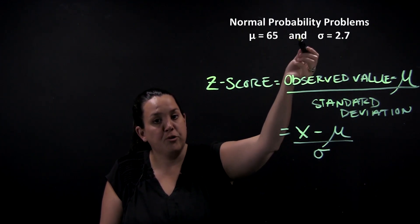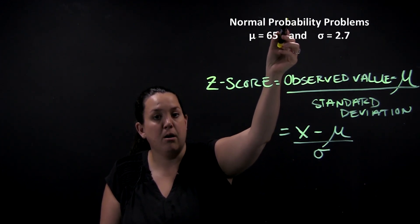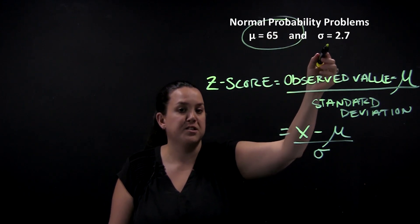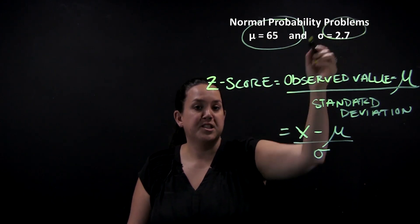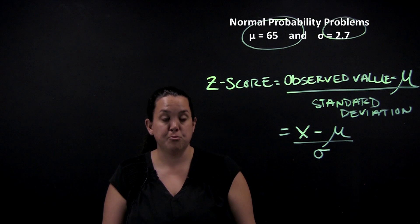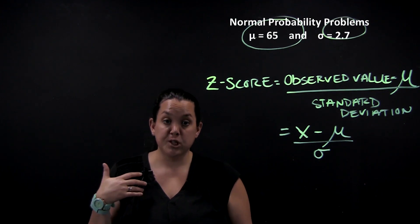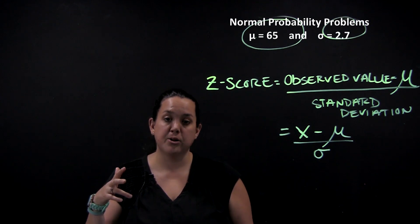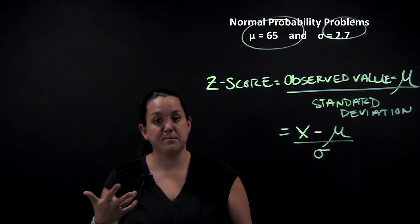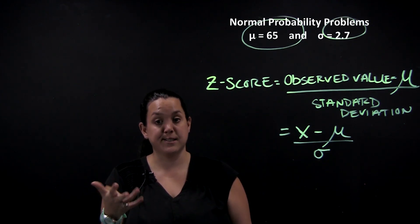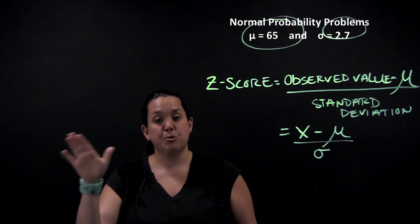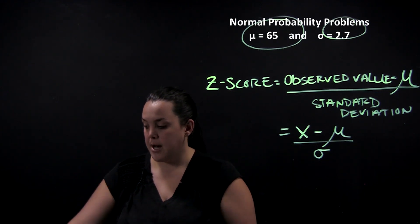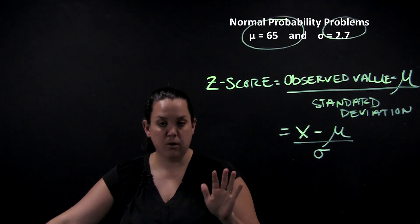Today I'm looking at the population of college females and their height. We have a mean of 65 and a standard deviation for the population of 2.7. I want to measure a z-score for my height because I'm not sure how I compare to the rest of the population, since my height isn't exactly one, two, or three standard deviations away.